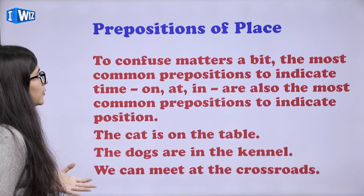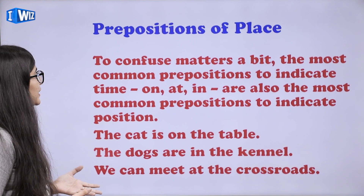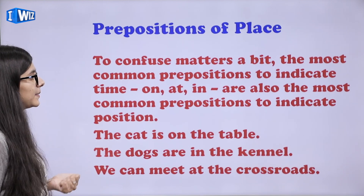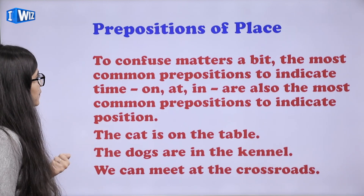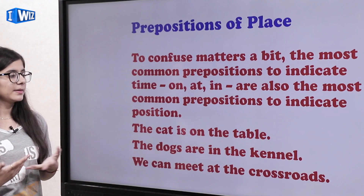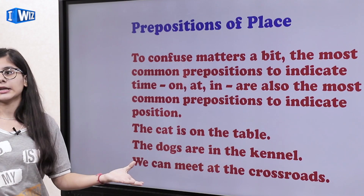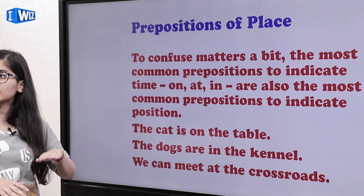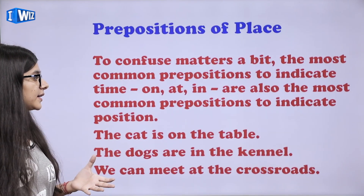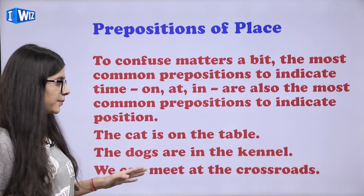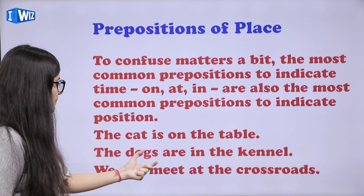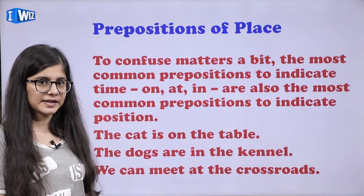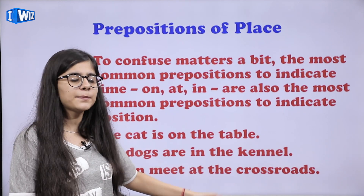Prepositions of place. Aisi prepositions that are used to indicate position — 'on', 'at', 'in' — are also the most common prepositions to indicate position. Matlab ki jo position bhi bata rahe hain. For example: the cat is on the table — jo cat hai, wo table ke oopar hai, position bata rahe hain. The dogs are in the kennel — kennel ke andar hai dog, uski position bata raha hai 'in'. We can meet at the crossroads — crossroads pe hum log mil sakte hain — 'at' bhi uski position bata raha hai.